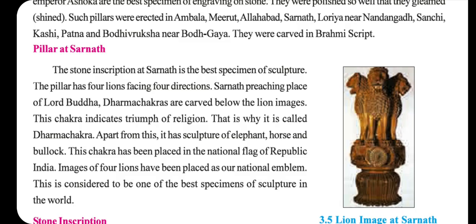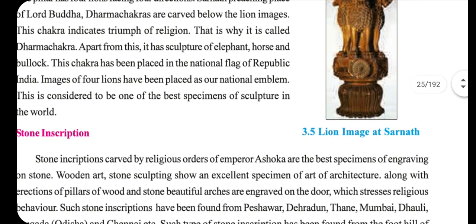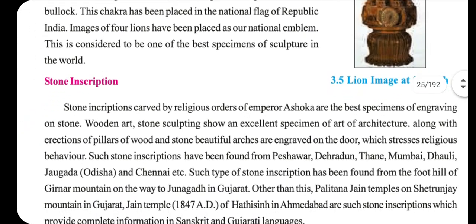Apart from this, the pillar has sculptures of an elephant, horse and bullock. This Dharma Chakra has been placed in the national flag of Republic India. The images of four lions have been adopted as the national emblem, and this is considered the best specimen of sculpture in the whole world.